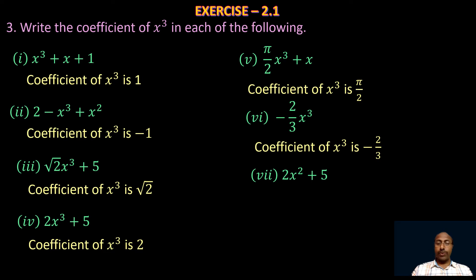Take the seventh one: 2x² + 5. In this polynomial there is no x³ term. We can include x³ as 0·x³, which equals 0, so the expression remains unchanged. The polynomial can be written as 0·x³ + 2x² + 5, and the coefficient of x³ is 0. If a term is not present, the coefficient of that term is 0 in any polynomial.